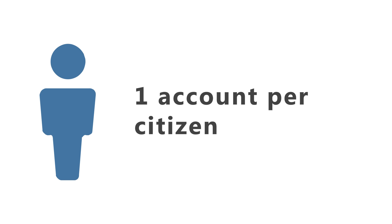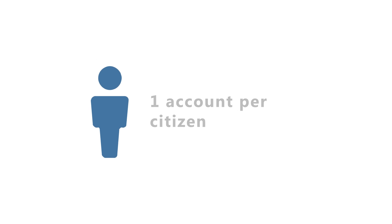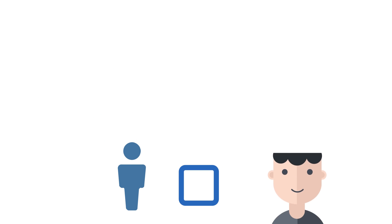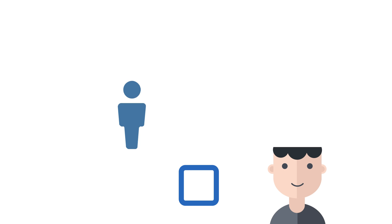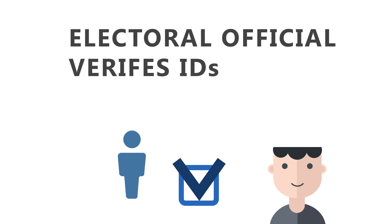Each citizen of Serenity then creates an account generated by a passphrase that they create, and then submits their account number into a box after verifying their identity with Simon, an electoral official.